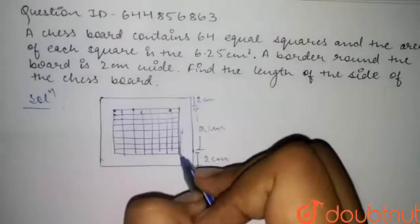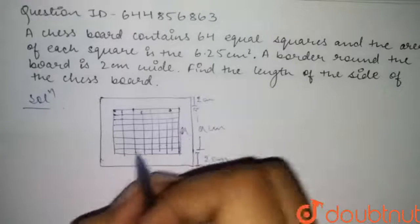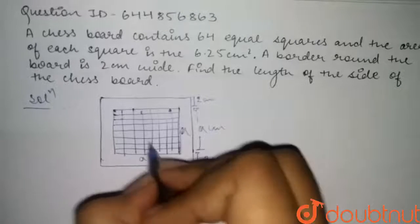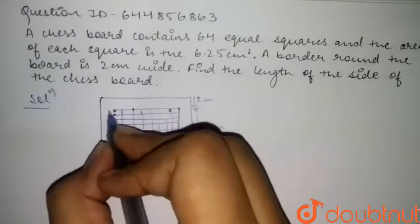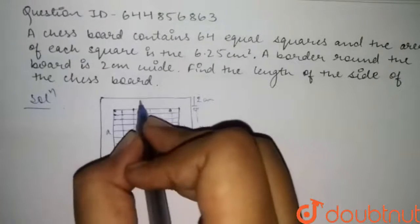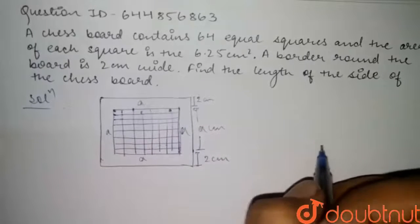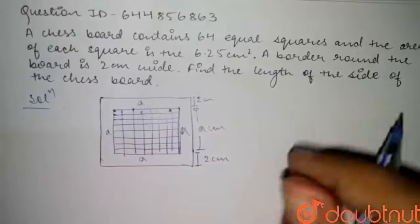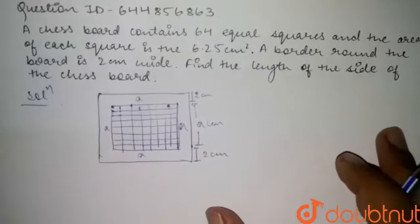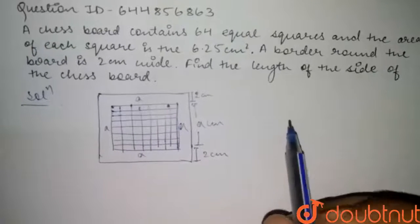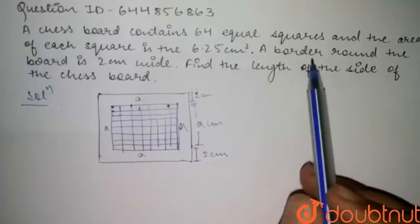This length will be 'a', this length will be 'a', this length will be 'a', and this length will also be equal to 'a'.